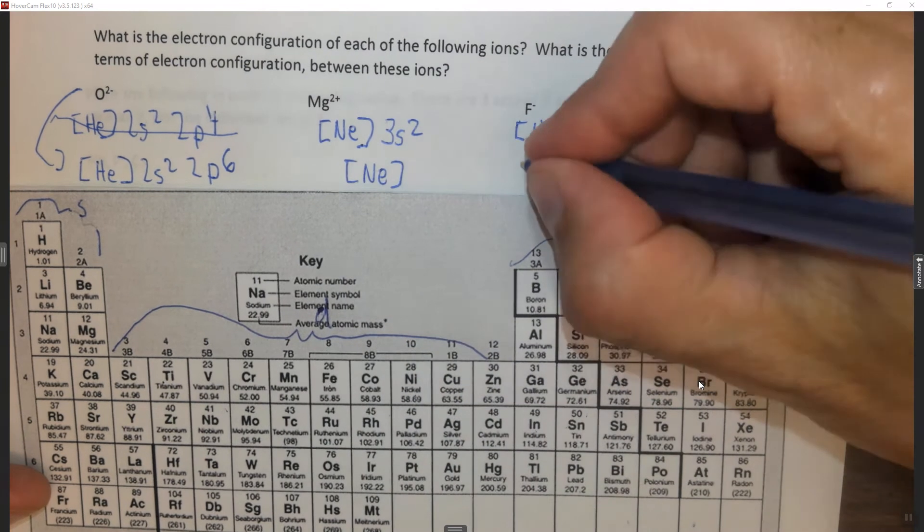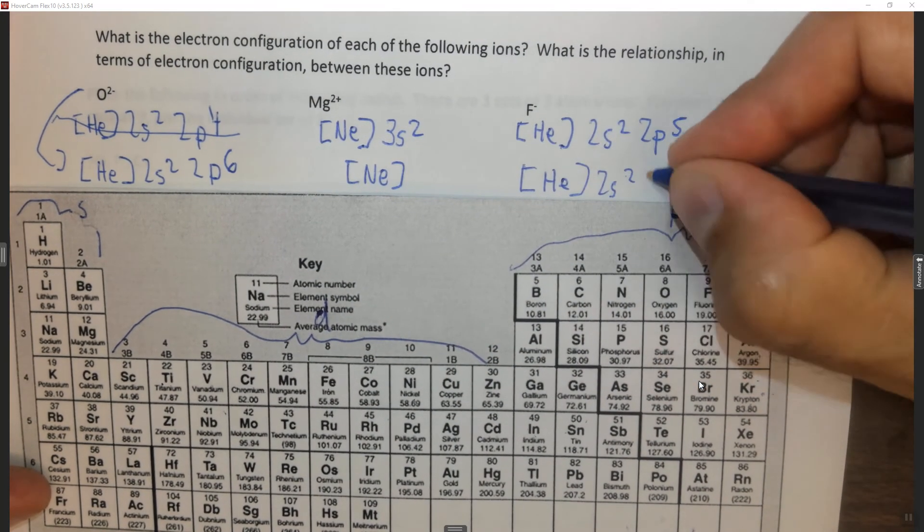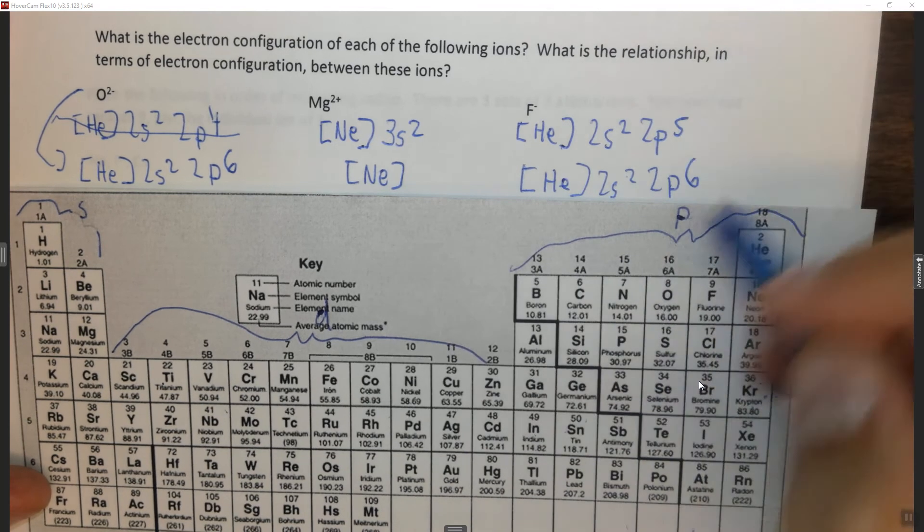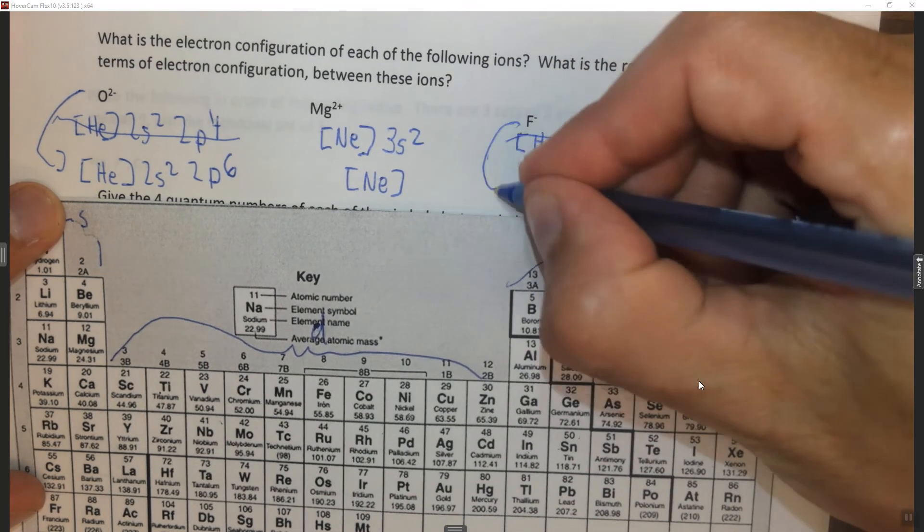But this is F⁻. So we have to add an electron. So this is helium, 2s², 2p⁶. We add the electron at the last orbital, right there. So this isn't what we want, that's what we want.